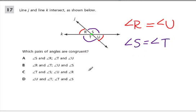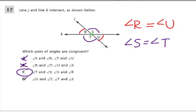They're equal but in different locations. S and R are not congruent, so that's out. R and T might be congruent, but we don't know — they're not vertical angles. U and T might be congruent, but we're not absolutely sure because they're not vertical angles. So the answer here must be C.